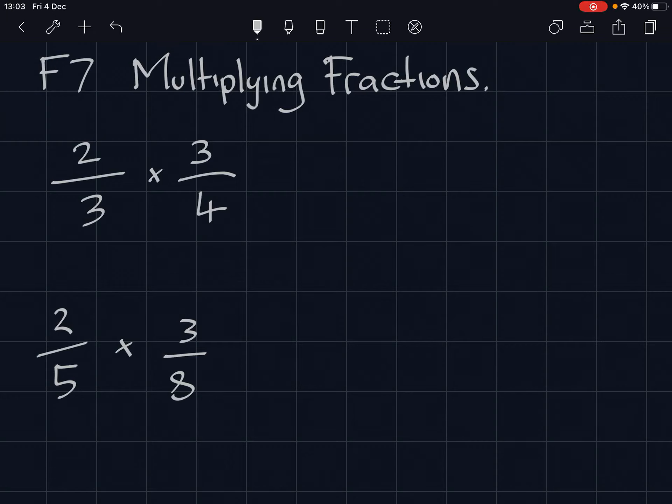This is multiplying fractions. So let's dive into a couple of examples. Firstly we have two-thirds times three-quarters. The way we multiply fractions is a lot easier than the way we add fractions.